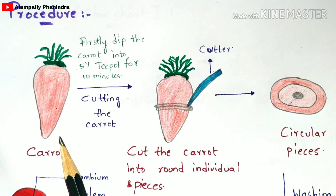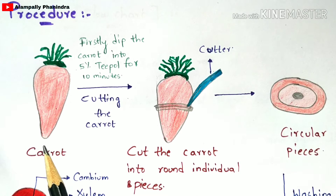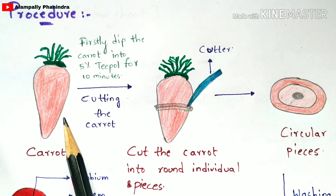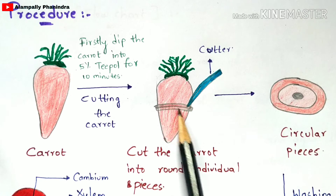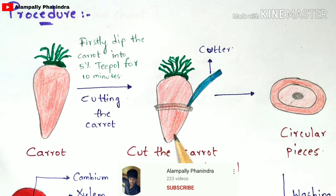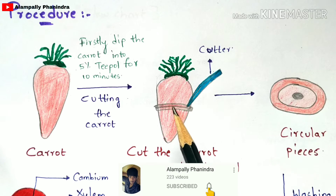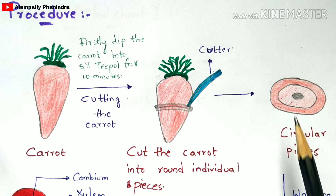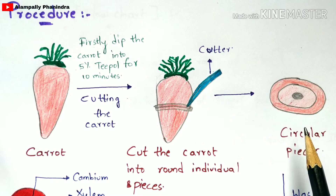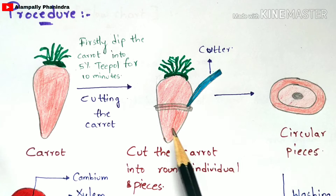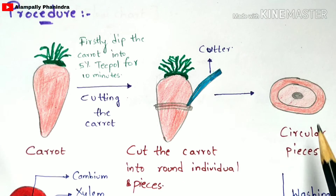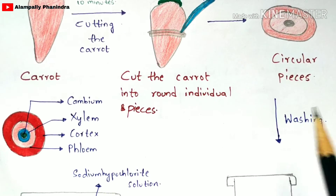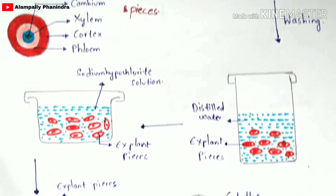To remove 100% of bacteria, further steps are needed. First, the carrot is cut using a cutter to produce circular pieces. There will be many circular pieces formed after cutting, though for convenience only one is drawn. These circular pieces are your explant material.